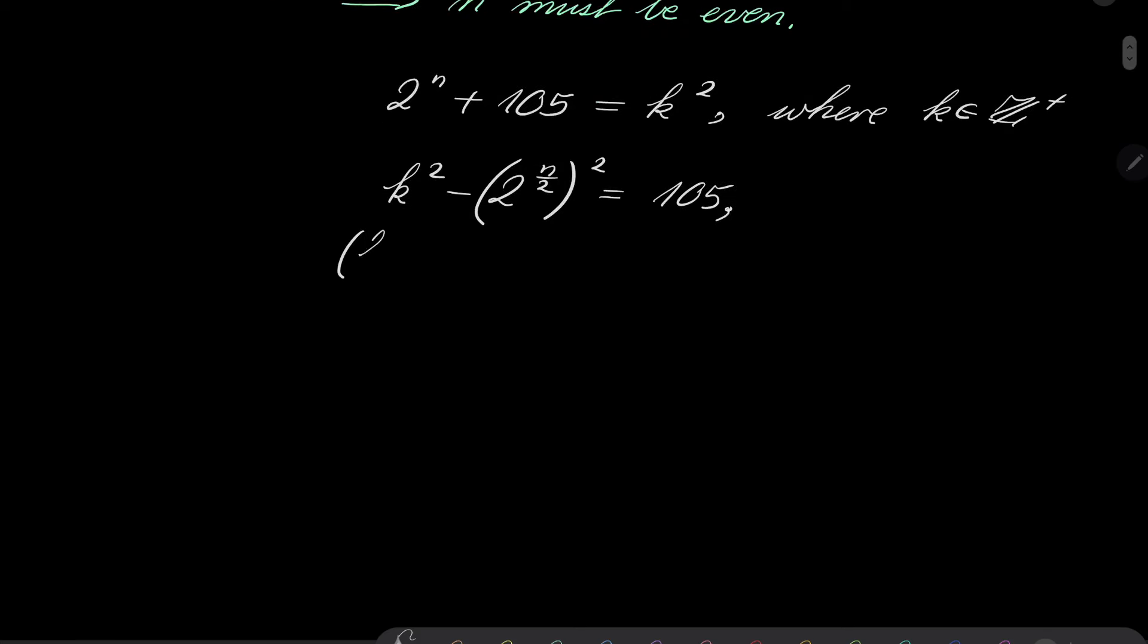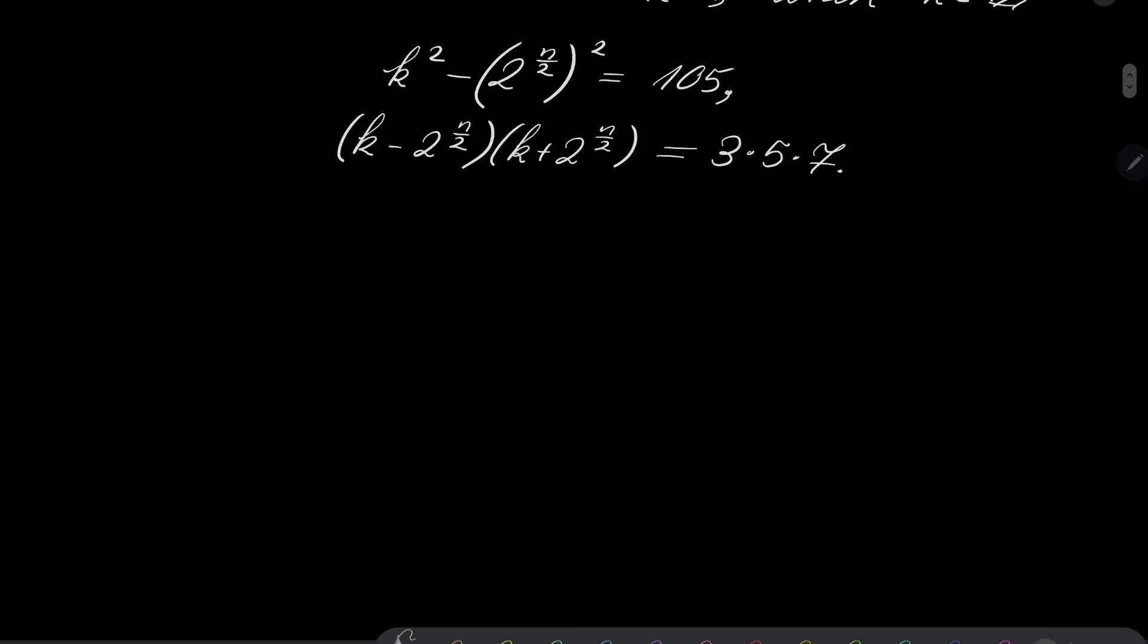Now, on the left-hand side, we can do the standard factorization. And on the right-hand side, 105 is 3 times 5 times 7. And now, we have only 4 options. And notice that this number is positive. This number, since the product is positive, also must be positive. And moreover, the first parenthesis is less than the second parenthesis.